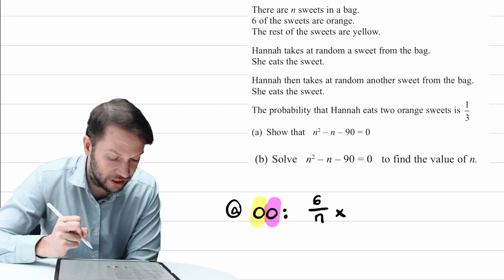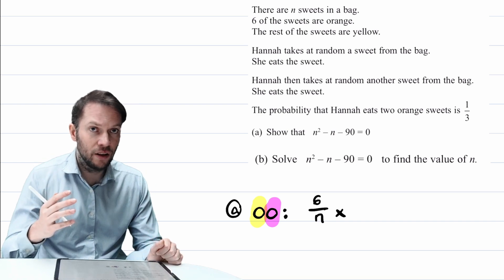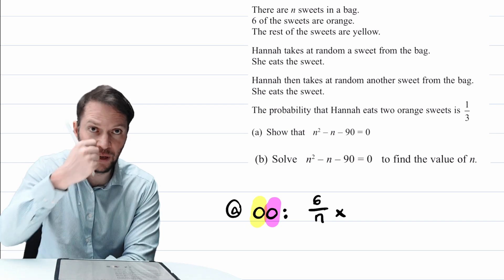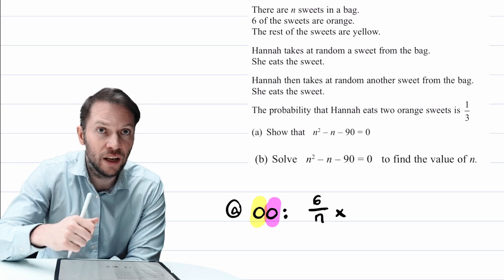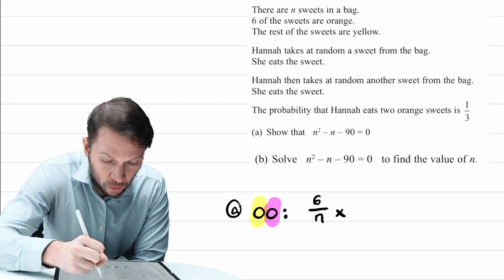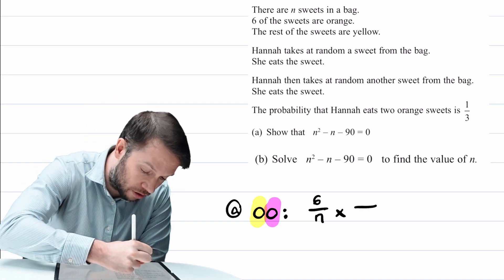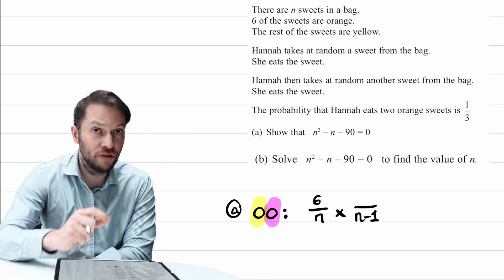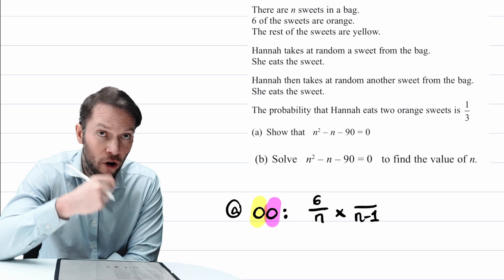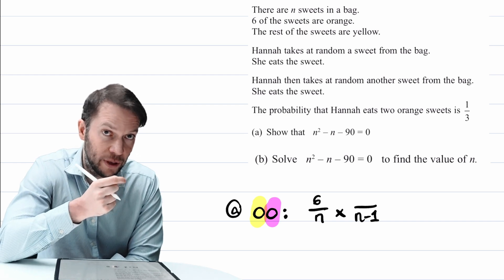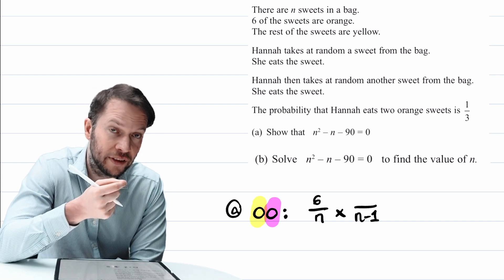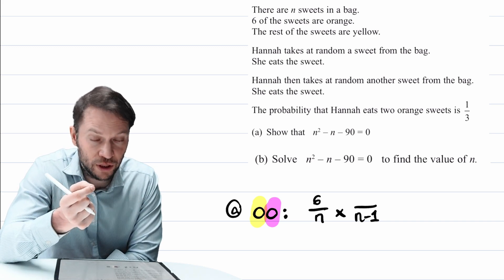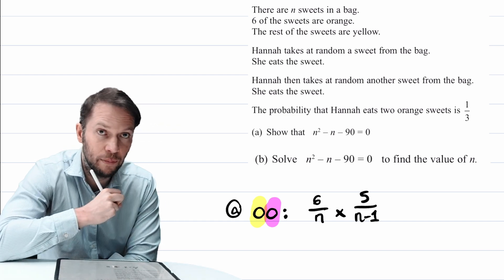And then we're going to times that by the probability that this second sweet that we eat is orange. Now, let's think about it. We had n sweets in the bag. We've eaten one of them. So we're going to have one less sweet to choose from because we ate it. We're not regurgitating the sweet. We're not putting it back. So there's going to be one less sweet. So it's out of n - 1 because there's one less sweet to choose from. Now, because also on that first pick we ate an orange sweet, that also means there's one less orange sweet. So there's only five orange sweets left. So out of the n - 1 sweets remaining, there's only five left which are orange. So it's going to be five out of n - 1.